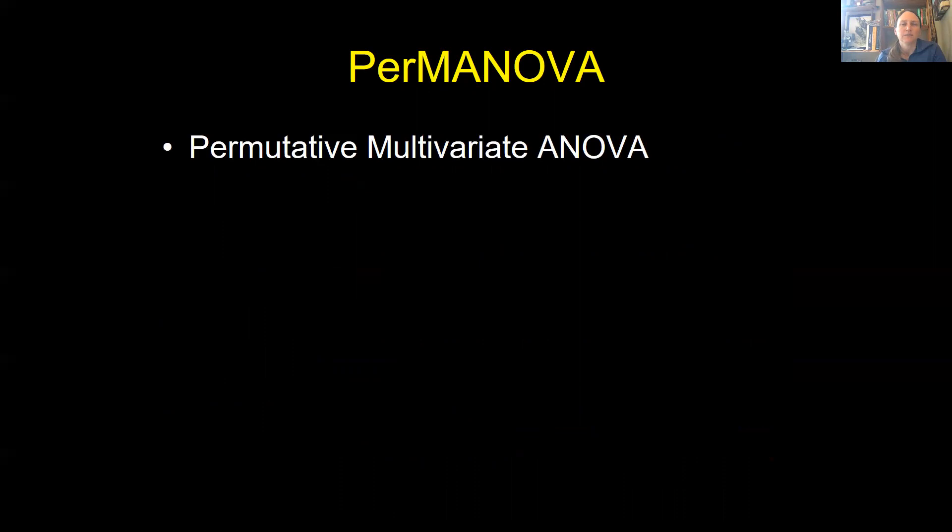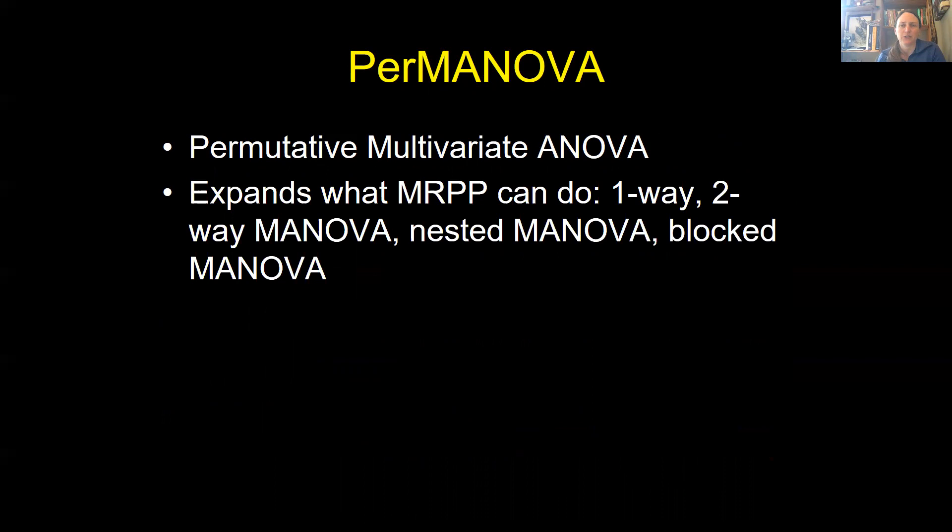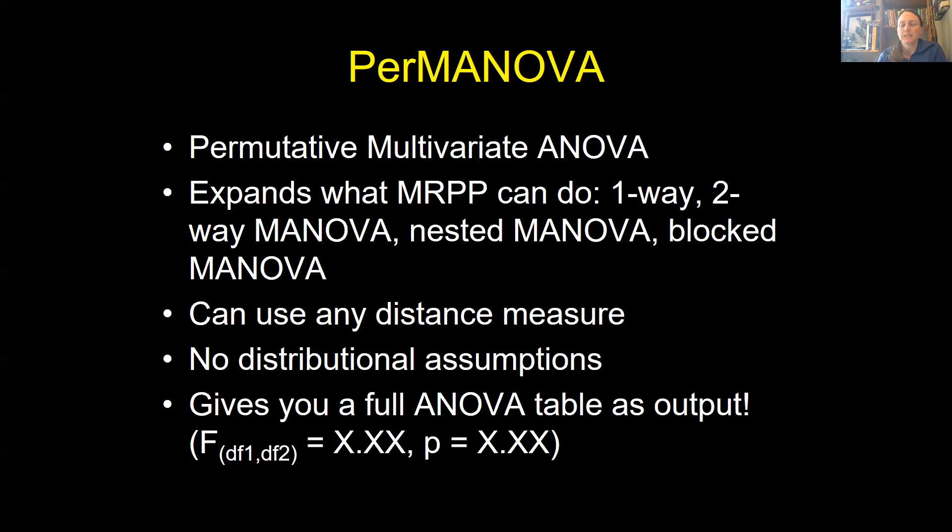And then there's PERMANOVA, which is permutative multivariate ANOVA. It basically expands on what MRPP can do. You can do a one-way PERMANOVA, a two-way PERMANOVA, nested, blocked. You can do all kinds of really cool things with PERMANOVA. You can also use any distance measure, and there are no distributional assumptions. But what's nice about PERMANOVA is it gives you a full ANOVA table as your output. It gives you degrees of freedom, sums of squares, mean squares, F ratios, and P values. So it's probably going to feel the most comfortable to you in some way.